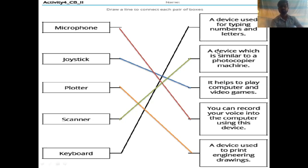Scanner is a device which is similar to a photocopier machine. With the help of scanner we can take a photocopy of any document, a personal document or a textbook or a photo. We can take a photocopy in our computer. Then keyboard. Keyboard is a device used for typing numbers and letters. With the help of keyboard we can type numbers and letters.